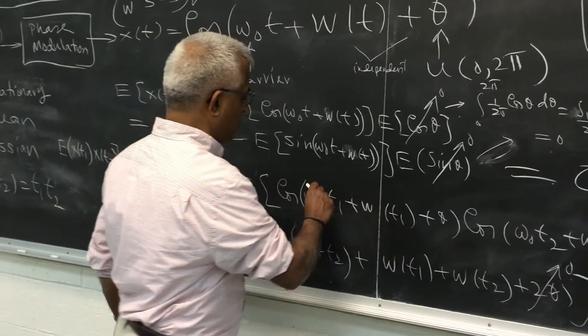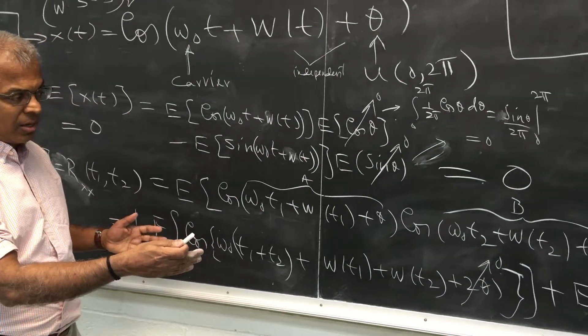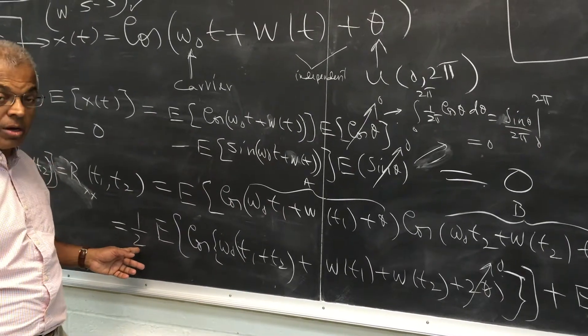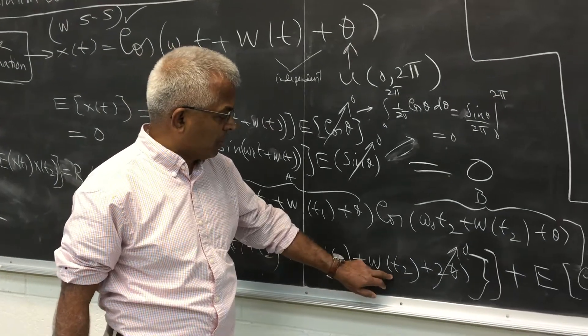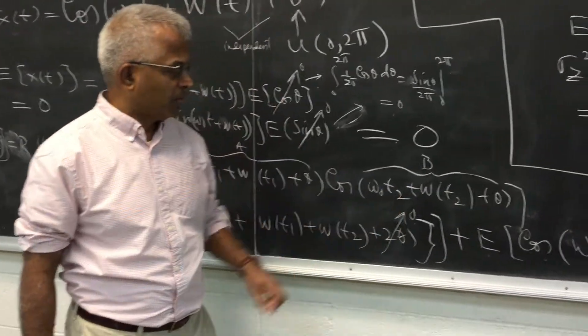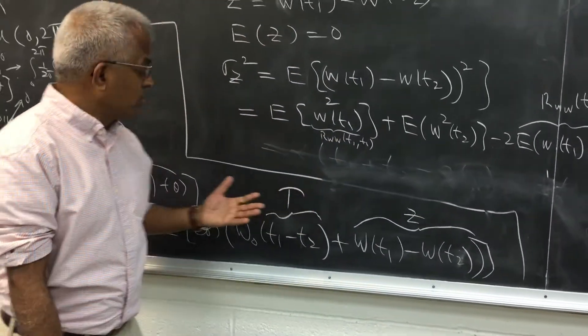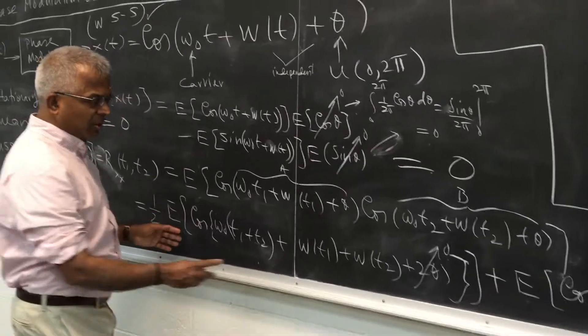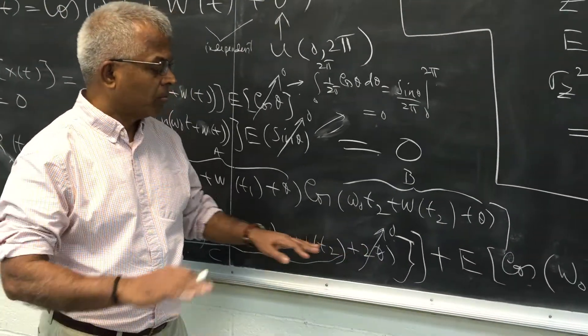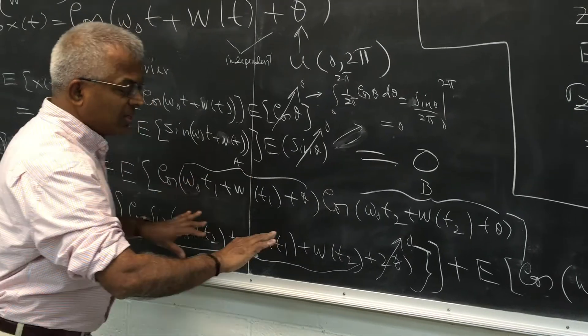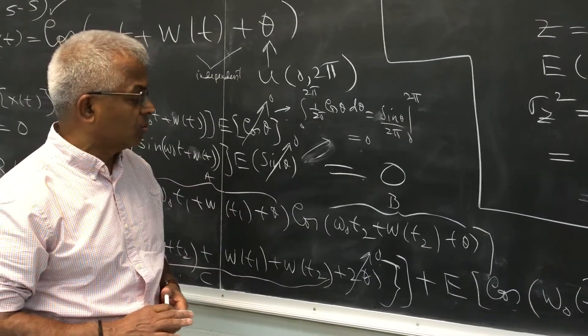This is of the form cos a times cos b. cos a cos b is cos(a+b) plus cos(a-b) over 2. You have omega(t1+t2) plus w(t1) plus w(t2) plus 2 theta, plus cos(omega(t1-t2)) plus w(t1) minus w(t2). Note that the theta is canceled. Now if you take the first term, once again you can expand as cos c cos 2theta minus sin c sin 2theta. But c and theta are independent because w and theta are independent. So once again expected value of cos 2theta and sin 2theta goes to 0.